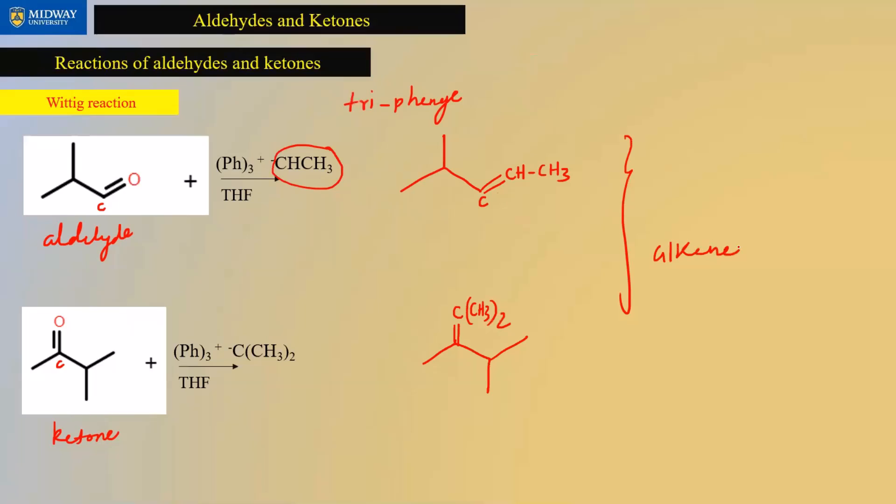Whether you start with an aldehyde or a ketone, when you have a Wittig reaction, you will end up with an alkene. If you plan to sit for any professional exam in pharmacy school, dental, or medical school - for sure the MCAT portion, Wittig reaction is one of the very commonly asked questions. And all you have to do is focus on what's that negative part, take that whole thing, replace the O with that component and that's the end of it.